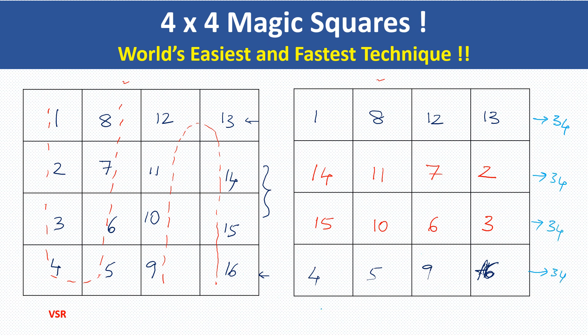Same with these columns. You see here, this column, this column, this column and this column. 1 plus 14 plus 15 plus 4 is nothing but 34. 8 plus 11 plus 10 plus 5 is nothing but 34. 12, 7, 6, 9 is 34. 13, 2, 3, 16 is 34.